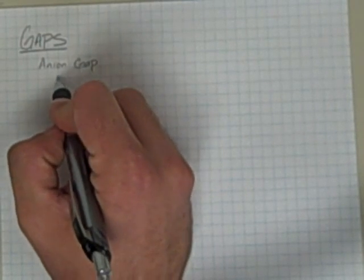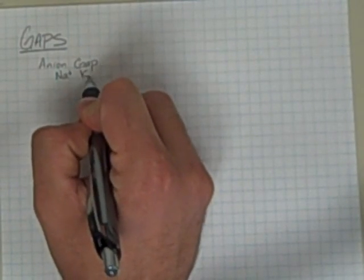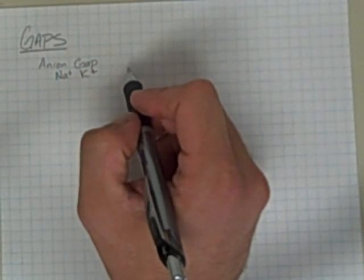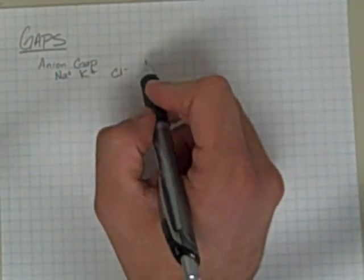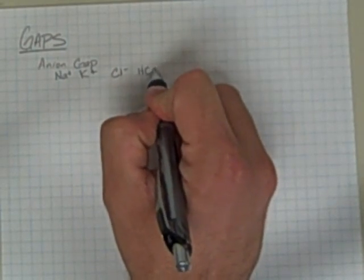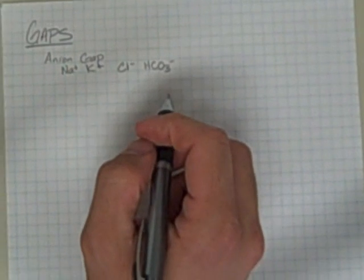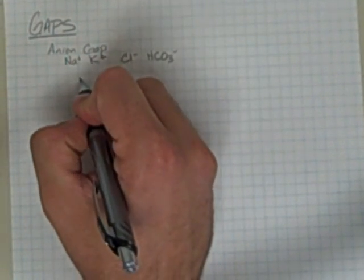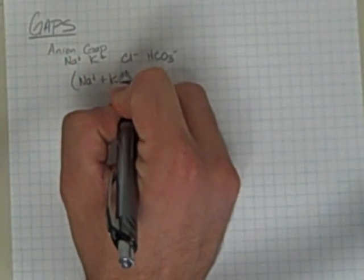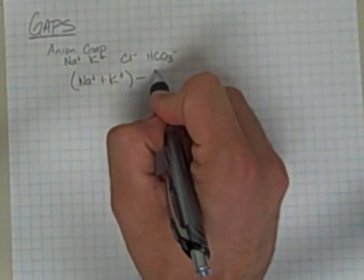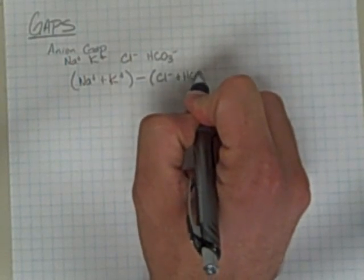The positively charged elements that play the biggest role in the body are sodium and potassium. The negatively charged ones that play the biggest role are chloride and HCO3, or our bicarbonate ion. So all we need to do is add sodium plus potassium and subtract from that the chloride plus the bicarb.